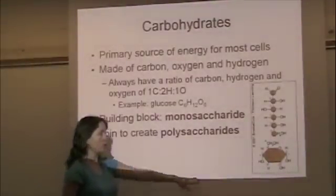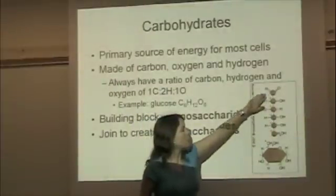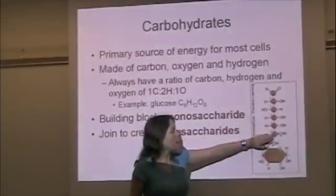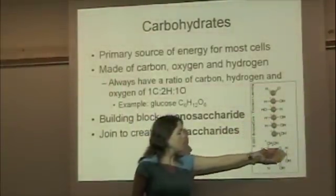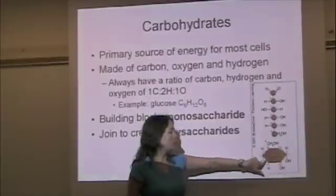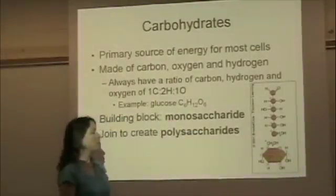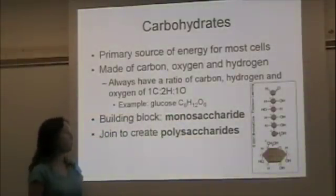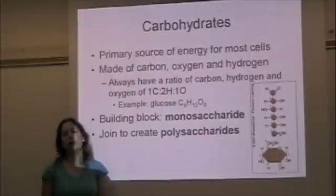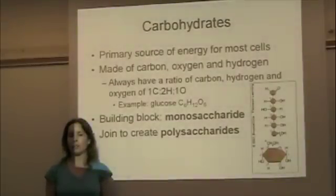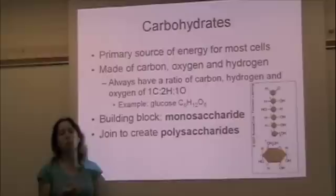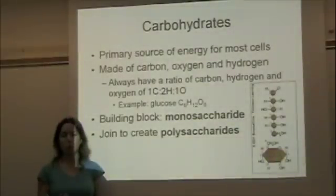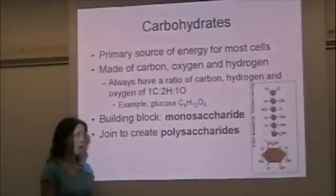Here is a picture of glucose. You can see that the carbons either form a chain backbone with oxygens and hydrogens coming off, or sometimes they can form a ring. The building block of the carbohydrate is the monosaccharide. Each monosaccharide usually has five or six carbon molecules, and we can put multiple monosaccharides together to create larger carbohydrates called polysaccharides.